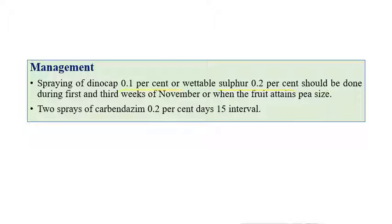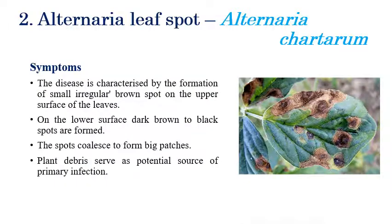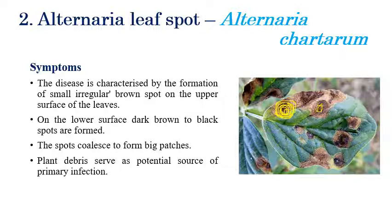The second disease is Alternaria leaf spot, caused by Alternaria chartarum. On the upper surface of leaves, brown color spots with a black center and clear concentric rings can be seen. The formation of concentric rings is a special characteristic of Alternaria. Initially small spots appear, then they coalesce and expand to cover the entire leaf, forming larger spots with concentric rings and a black center.